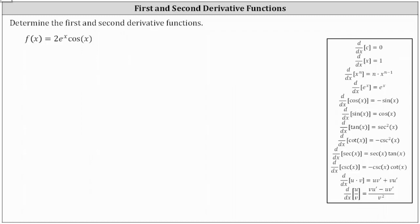We're asked to find the first and second derivative functions given f of x equals two e to the x times cosine x. Because f of x is a product of two functions of x, we'll need to apply the product rule of differentiation shown here on the right. We'll let the first function be equal to u and the second function be equal to v.